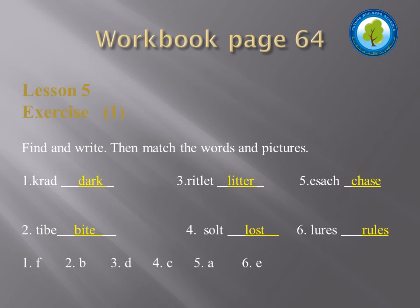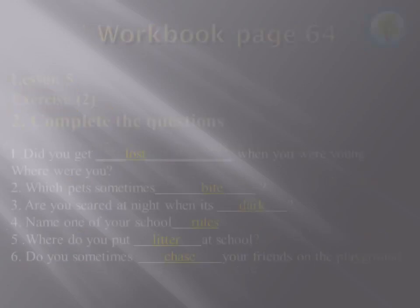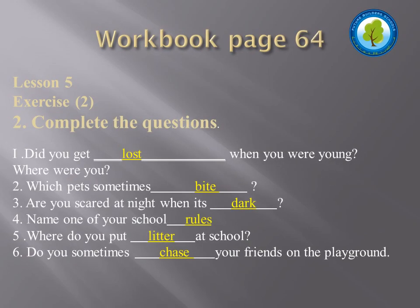Now you have the pictures — you have to match each word to the correct picture. Number 1 is F, number 2 is B, number 3 is D, number 4 is C, number 5 is picture A, and number 6 is picture E. Now for exercise number 2, page 64, we are going to use the words from exercise number 1 to complete the questions.